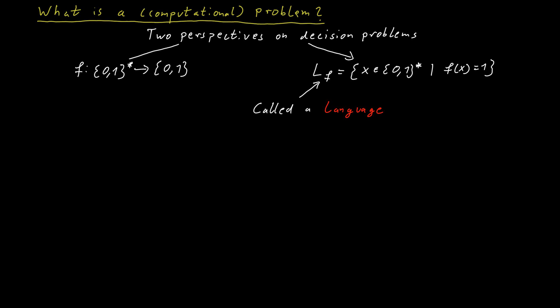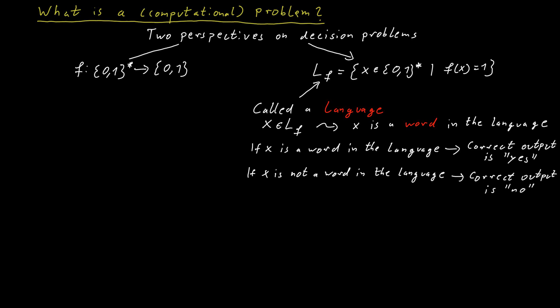And then we are interested in checking for some given word whether it's contained in the language or not. So whether we can find it in the dictionary or whether it's not included in the dictionary. If the word is part of the language and it's in the dictionary, then we should respond with yes, this is a word in the language. And if the word is not in the language, it's not in the dictionary, it's not in the set, then we should respond with no.